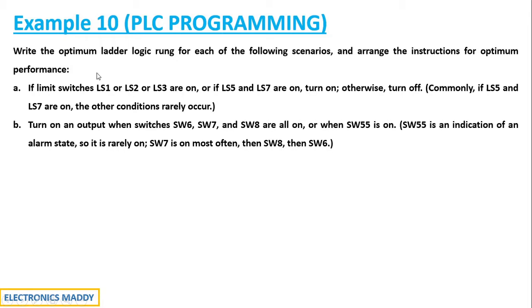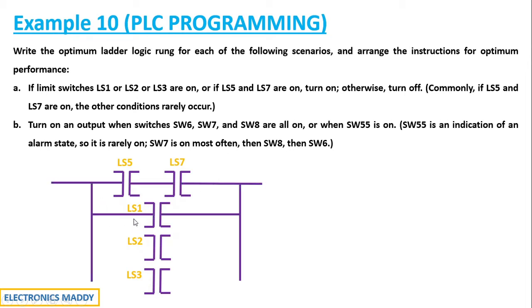Let us go through the general ladder diagram process. We have LS1 switch, LS2 switch, LS3 switch that are connected in parallel in this particular fashion. Because these are OR operation. LS5 and LS7 should be connected in series because they correspond to AND operation. Let us enclose the connection by connecting them in parallel because there is another OR. Now we have input and output.